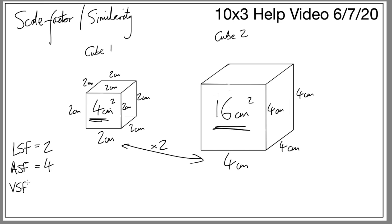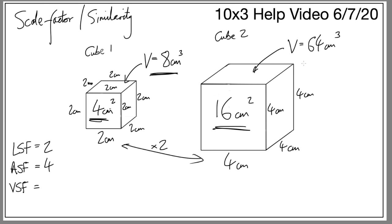Now let's look at the volume scale factor. The volume of cube one is 2 times 2 times 2 equals 8 centimeters cubed. The volume of cube two is 4 times 4 times 4 equals 64 centimeters cubed. To go from 8 to 64, multiplying by 4 gives only 32, so actually I need to multiply by 8. The volume scale factor is 8.